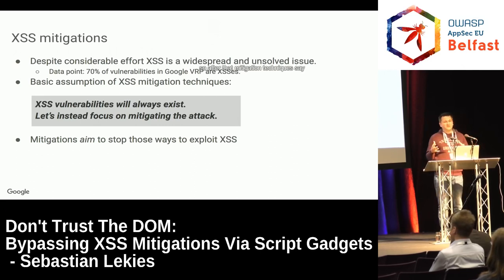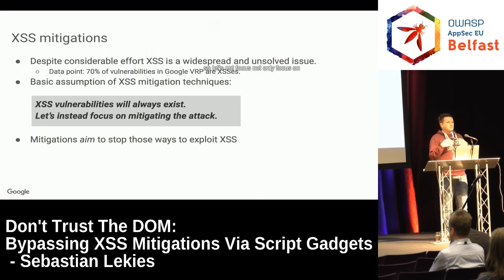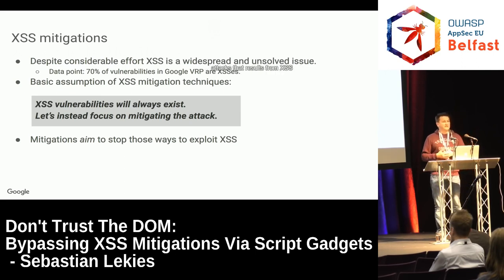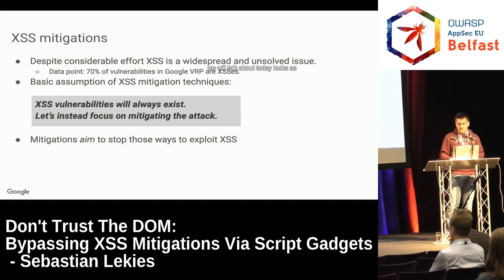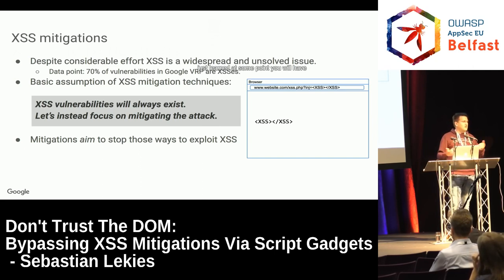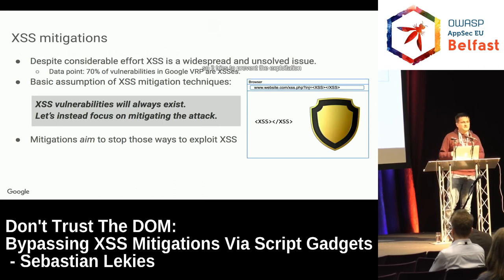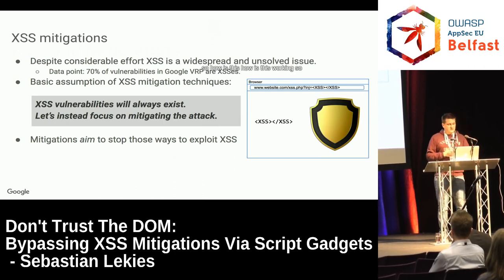XSS mitigation techniques say: XSS vulnerabilities will always exist. Even if we try very hard, we cannot create an application without an XSS. So let's not only focus on preventing XSS but also try to mitigate attacks that result from XSS vulnerabilities. The attacker model we will talk about today: you have a website, and at some point you will have an XSS in your website, and that's where the XSS mitigation kicks in to try to prevent exploitation.